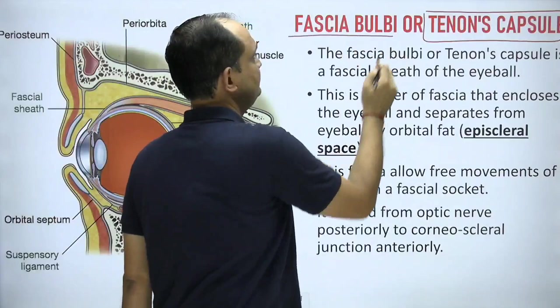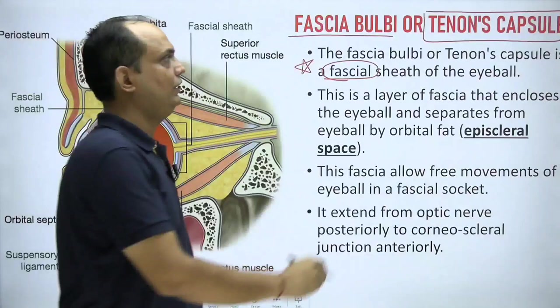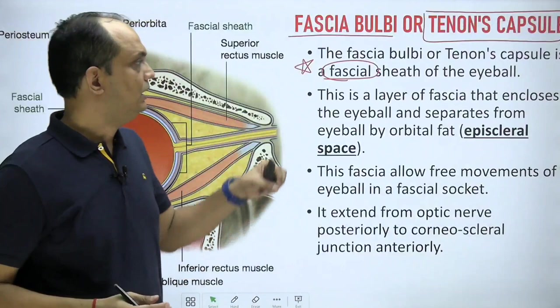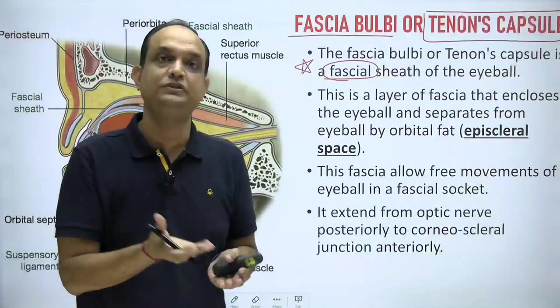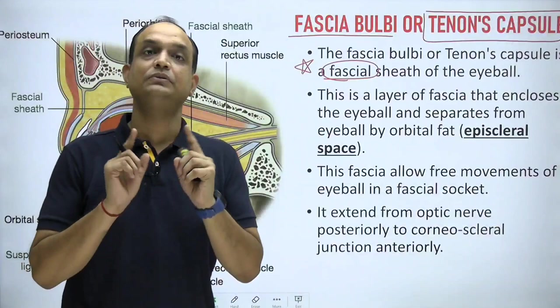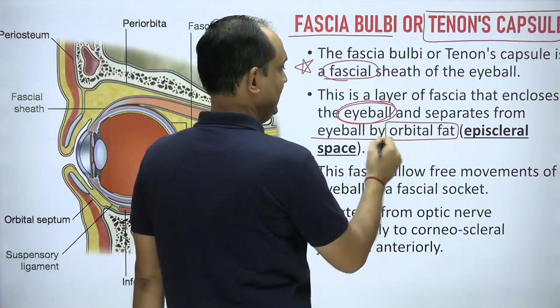The next part is the tenons capsule, also known as fascia bulbae or bulbar fascia of the eyeball. This bulbar fascia or tenons capsule is a facial sheath — a facial covering of the eyeball. It is not a covering of the orbit; the periorbita is the inner lining of the orbit, while the tenons capsule is a facial covering around the eyeball. It is a layer of fascia that encloses the eyeball, remaining separated from it by orbital fat.